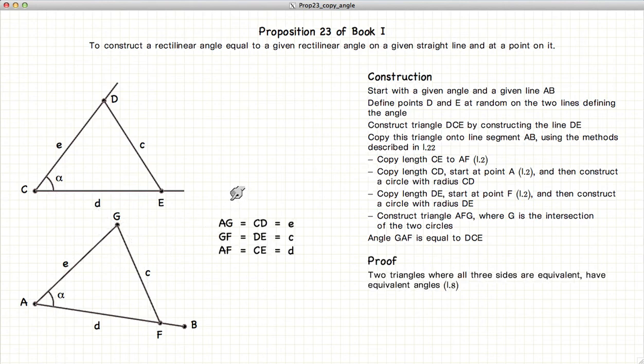And the proof of this is very simple. If you remember from Proposition 8, if we have two triangles where the three sides are all equal, where E is E, C is C, D is D, in other words side, side, side, the triangles are equal in all respects, including the angles inside the triangles.